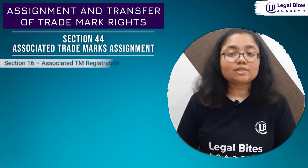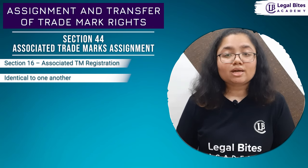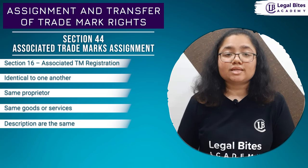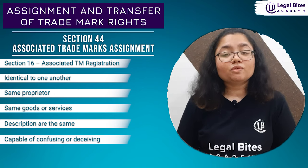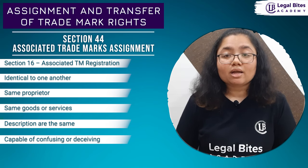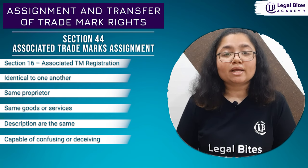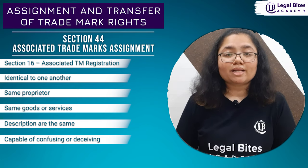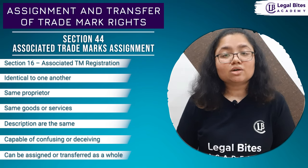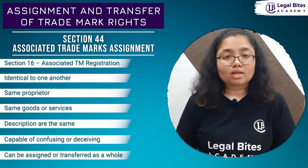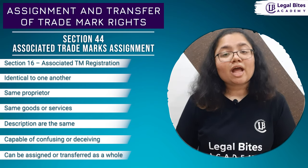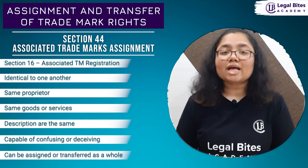Associated trademarks are explained in section 16 of the Act. They are the ones that are identical to one another and belong to the same proprietor, used by him for the same goods or services, or where the description of the goods or services is the same, or if the marks resemble so much that they may be capable of confusing or deceiving the public. For example, Apple is the trademark and is used in its products like iPhone, iPods, iWatch and other goods provided by Apple — these must be registered as associated trademarks. These associated trademarks can be assigned or transferred as a whole, but they are considered as a whole only for the purpose of assignment or transfer; for all other reasons they are considered separate and independent, as given in section 44.